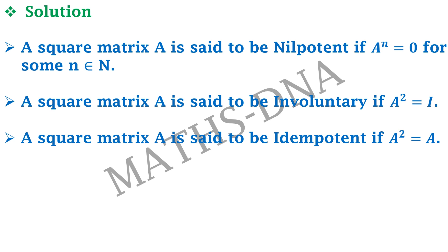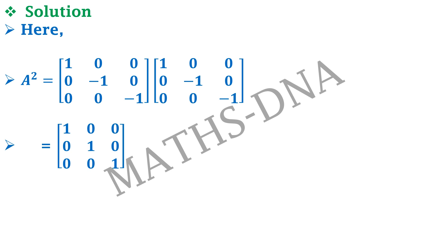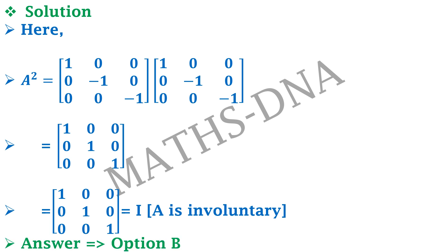Now moving on to our solution. We simply take the square of the matrix, i.e., A squared, multiplying the same matrix with itself. We get 1, 1, 1, that is the identity matrix. And so our given matrix A is involutory, and hence the correct answer is option B.